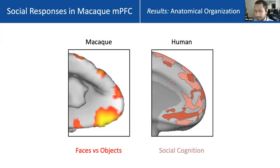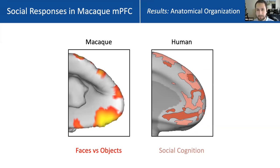In terms of anatomical organization, there's a striking parallel with the organization observed for human social cognition regions: in both species, you see this alternation of socially preferring and non-preferring domains across the dorsal to ventral axis in mPFC. We next wanted to ask whether this is a pattern we're reading into noisy data, or actually a reliable pattern of response.